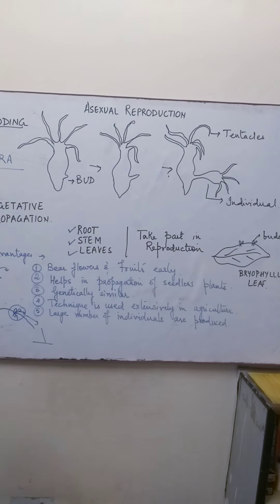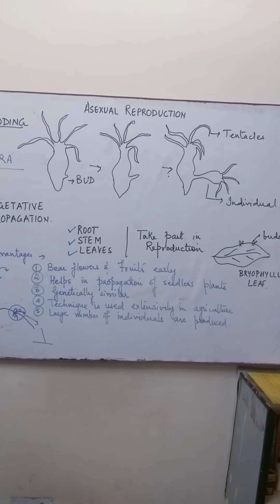There are many cases of vegetative propagation. Sugar cane and banana are other examples — these are plants which use vegetative propagation for the formation of new individuals.